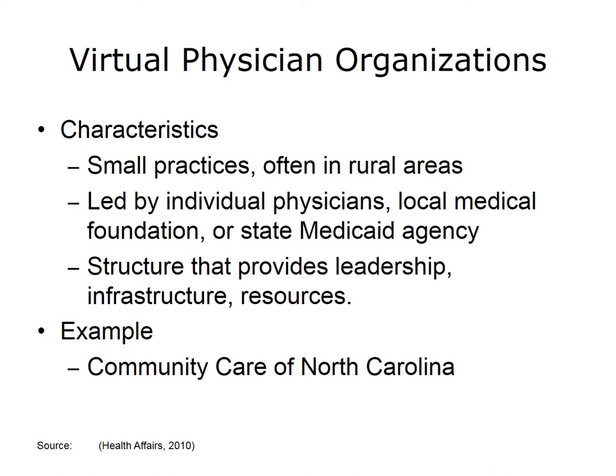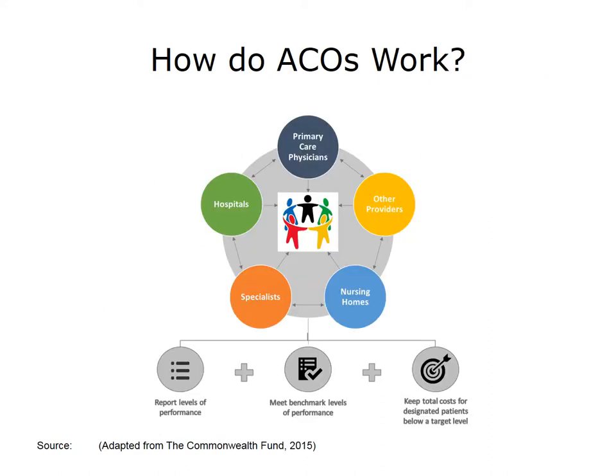Next, we will discuss how ACOs work. ACOs bring together a group of providers, as shown in the figure — for example, hospitals, primary care physicians, specialists, nursing homes, and other providers. These organizations come together and agree to report and share data on quality metrics and financial performance. In an ACO, these providers jointly set benchmark levels of performance and target levels of spending or costs. Then, the ACO members together must meet benchmark levels of performance and keep the total cost of care below the target level.